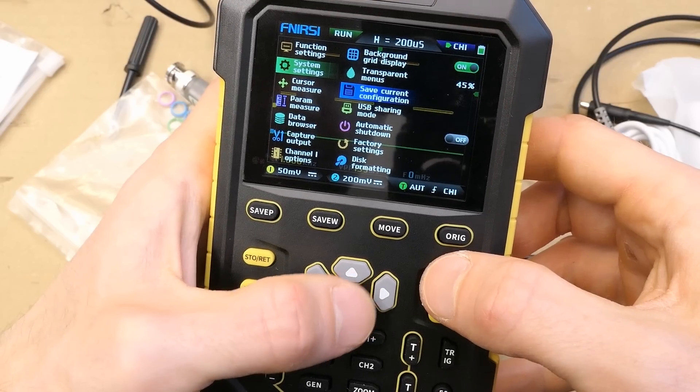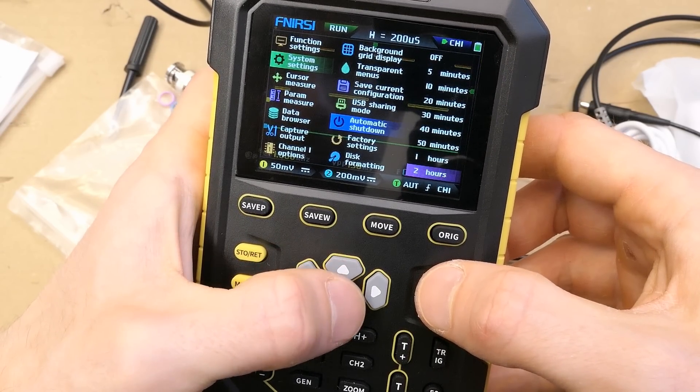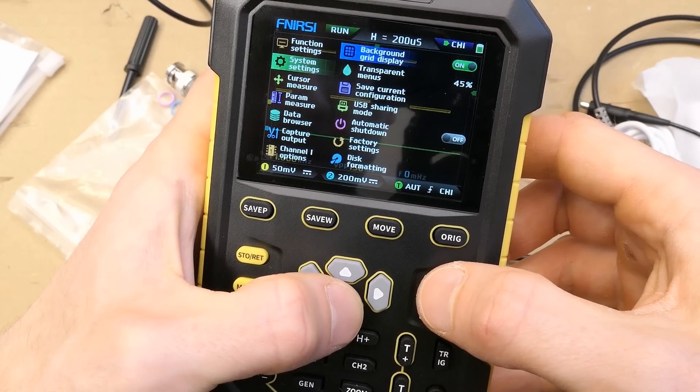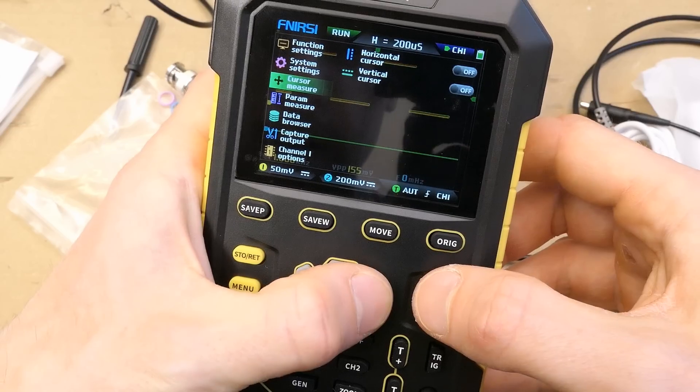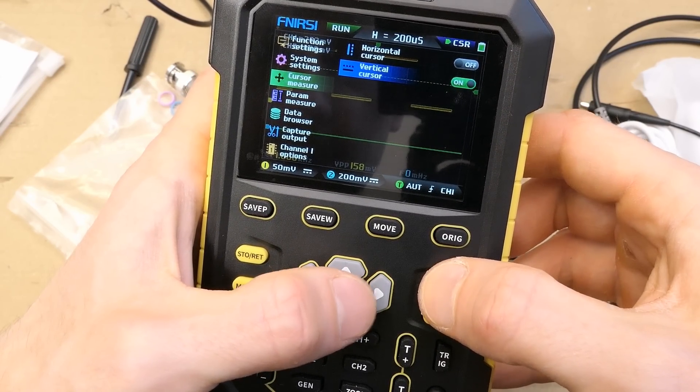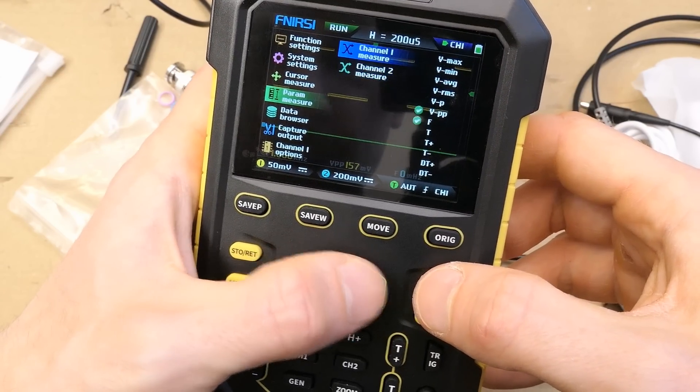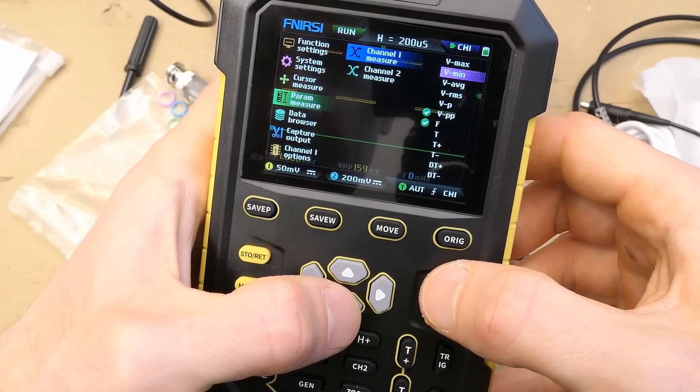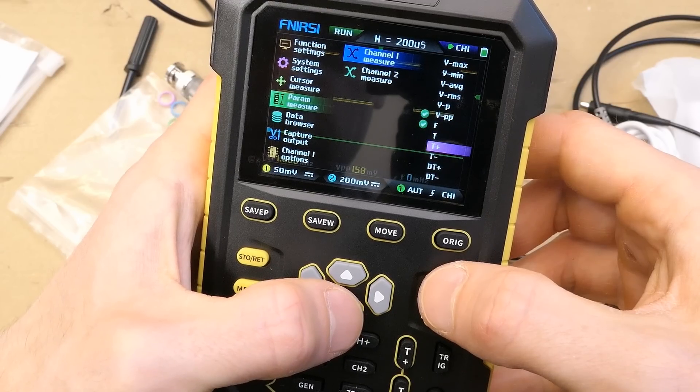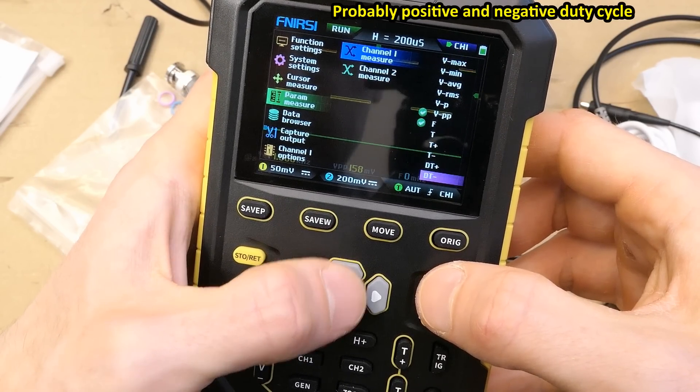Settings, save current configuration, USB sharing mode, automatic shutdown after a certain time, up to two hours, factory settings, disk formatting, cursor measure, horizontal cursor, vertical cursor, parameter measure for channel one or channel two, maximum minimum voltage, average, RMS peak, peak to peak, frequency period, positive half cycle time, negative half cycle time, and a lot of other settings.